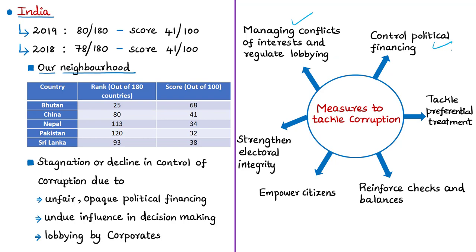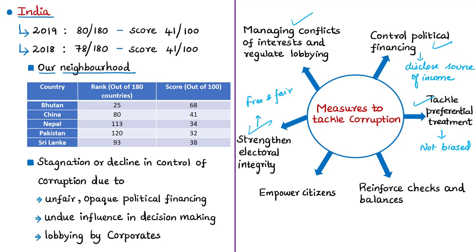The second recommendation is to control political financing — political parties should disclose their sources of income and assets, and governments should empower oversight agencies with stronger mandates and resources to prevent excessive money and influence in politics. The third recommendation is to strengthen electoral integrity by ensuring elections are free and fair, preventing vote buying for cash and misinformation campaigns, to rebuild trust in government and enable citizens to punish corrupt politicians. The fourth recommendation is to tackle preferential treatment, ensuring service delivery and public resource allocation are not driven by personal connections or biased towards special interest groups.